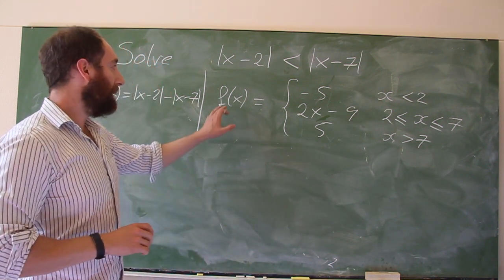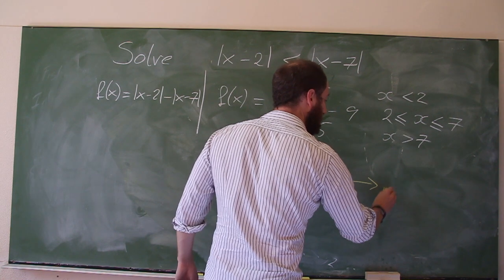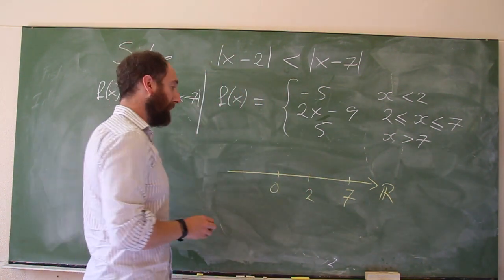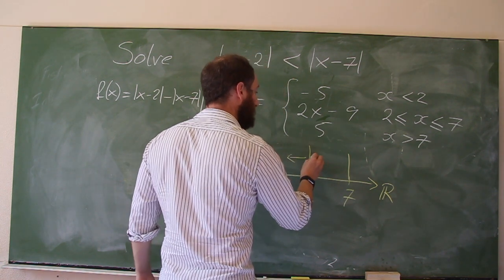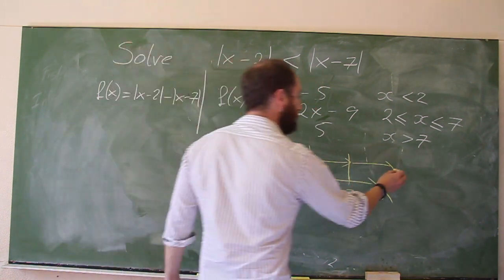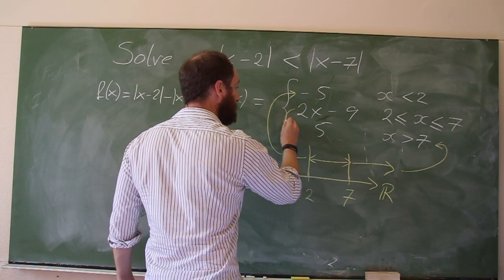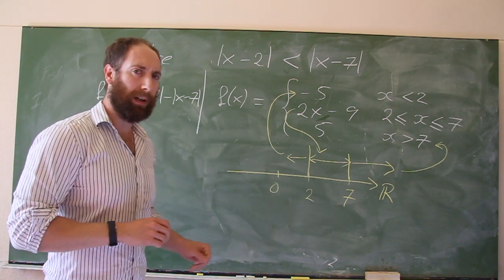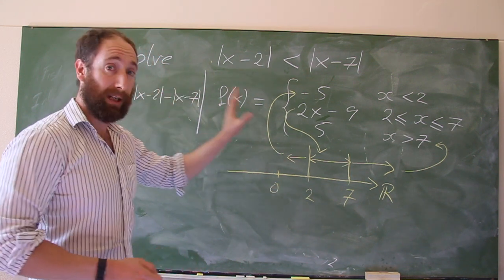We now have a function defined piecewise, with three pieces. If we take the real line with the origin, 2, and 7 marked, the function is defined separately for the region to the left of 2, between 2 and 7, and to the right of 7. The region above 7 gives 5, the region below 2 gives minus 5, and the middle region gives 2x minus 9. Now we need to remind ourselves what the inequality was and solve it using this piecewise function.